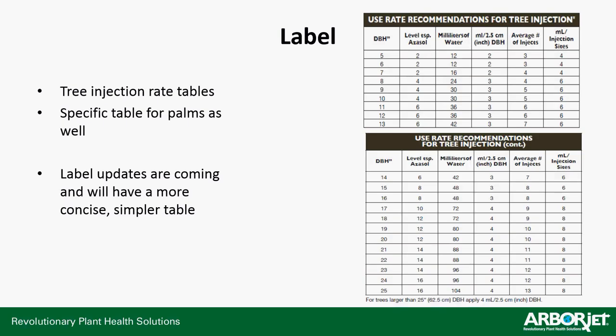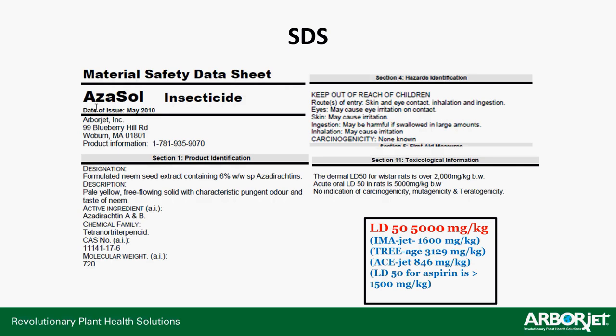There is a tree injection label, and there's also a specific table for palms. It's a fairly confusing label for trunk injection, which is partly why it's not widely used for that purpose. But you can see based on your diameter: the number of level teaspoons to use, the number of milliliters of water to dissolve those teaspoons into, the number of injection sites, and milliliters per injection site. It kind of steps you through the whole calculation process in a single table. Finally, the SDS — it is an organic product but it does have an SDS sheet. The LD50 number is 5,000, which is very high, meaning it has a very low toxicity level. It will take a large amount of azadirachtin to actually cause any effect to your body.